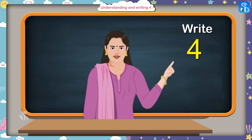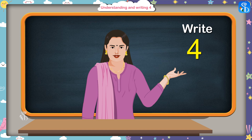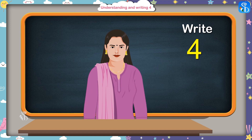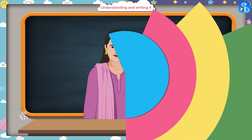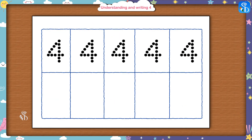This means that you have understood what is meant by four very well. Now we will see how to write the number four. I have drawn the figure of number four with the help of dots. First we will trace this figure with the pencil for practice, and then write number four on our own.